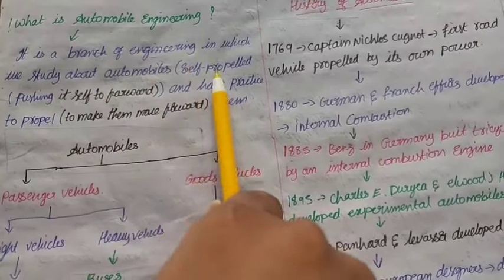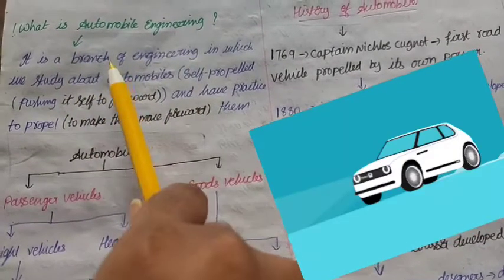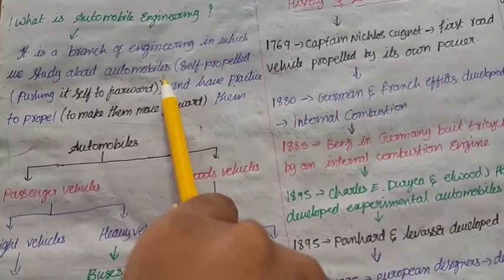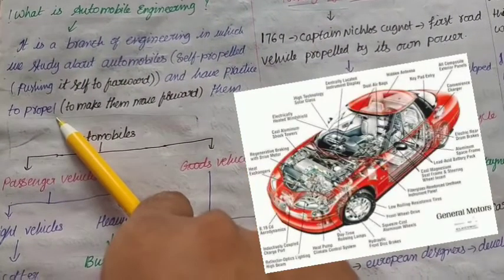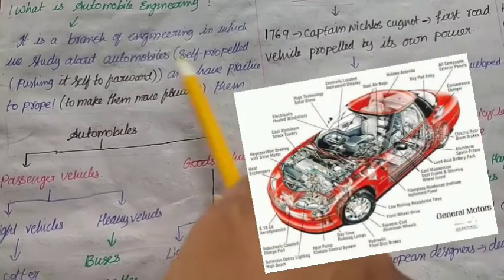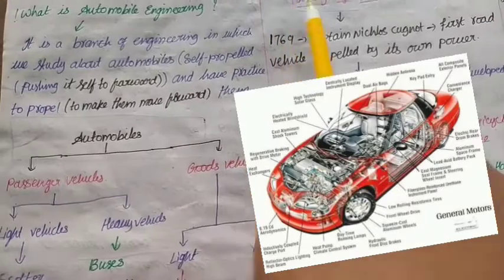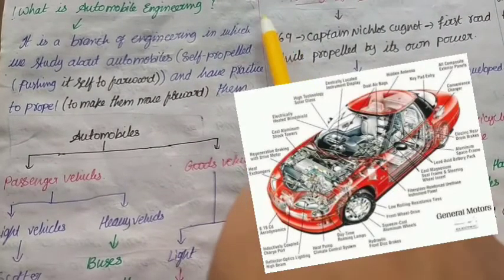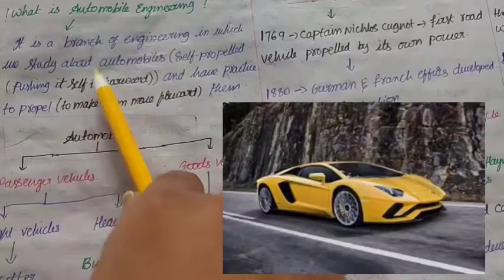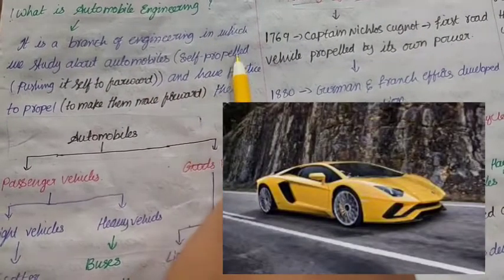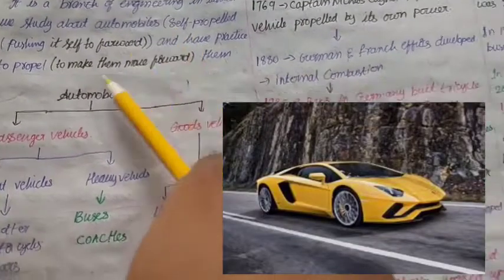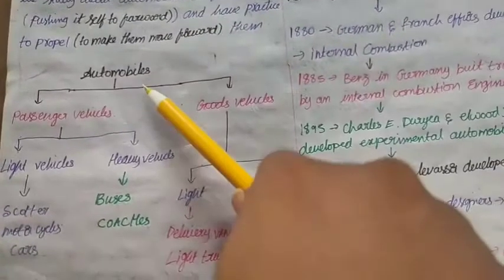Self-propelled means pushing itself forward. So anything which pushes itself forward is called an automobile. They also have to propel others, meaning to make them move forward or to make any things move forward. So automobile engineering means the study about automobiles — automobiles means self-propelled, that is moving itself forward.